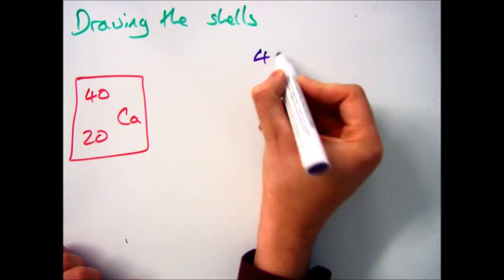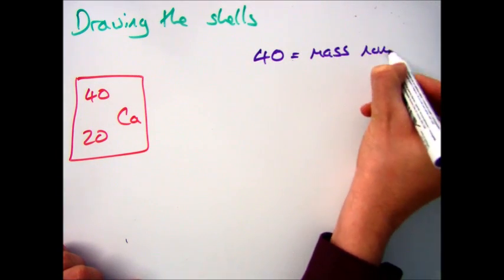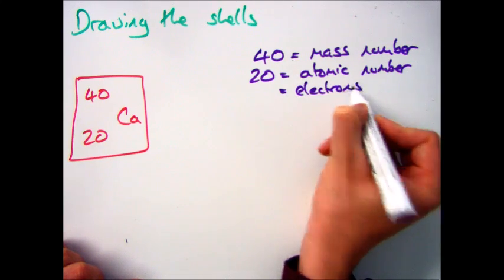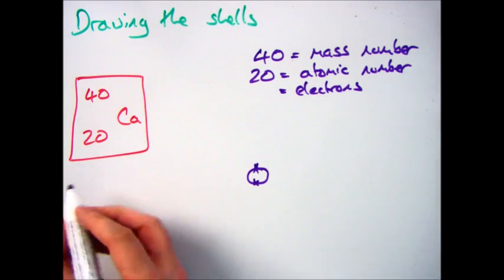Okay, so if we have a look at another example then, let's go for the most complicated one you might be asked, which is calcium, which has got a mass number of 40 and an atomic number of 20, which tells me we have 20 electrons.